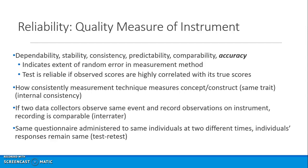If two data collectors observe the same event independently, don't communicate with one another, and record observations on an instrument such as a checklist, then a statistic is calculated — whether it be percent agreement, a kappa coefficient, a t-test, or even a correlation — then you say that you've got inter-rater reliability.